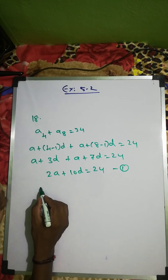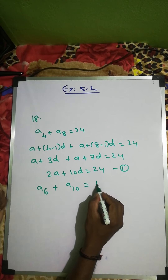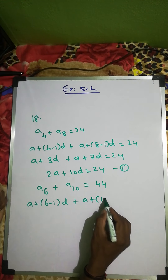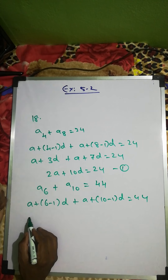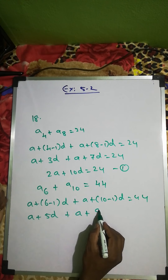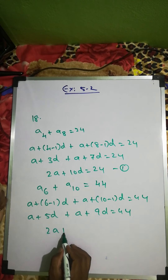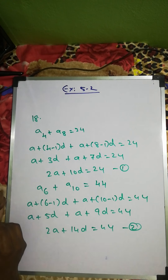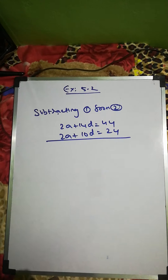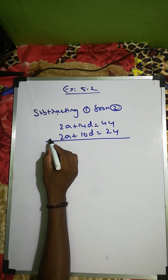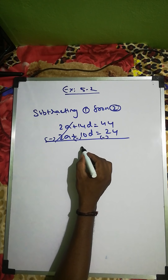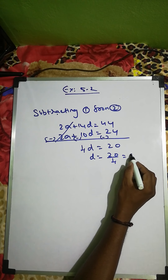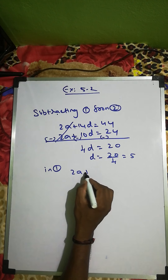The second condition: the sum of the 6th and 10th terms is 44. So (a + 5d) + (a + 9d) = 44, giving 2a + 14d = 44. This is equation two. Subtracting equation one from equation two: 4d = 20, so d = 5.